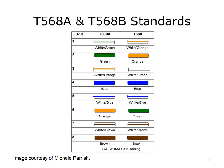If you are going to make your own twisted pair cables, you should follow the T568A or T568B standards. The pin out for the T568A standard, starting with pin 1, is: white/green, green, white/orange, blue, white/blue, orange, white/brown, and ending with pin 8, brown.